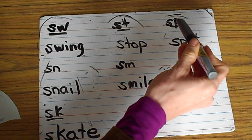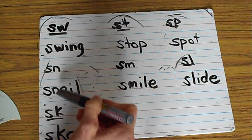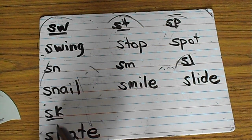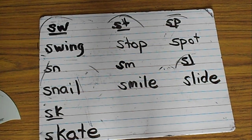Swuh, swing. Stuh, stop. Spuh, spot. Snuh, snail. Smuh, smile. Sluh, slide. Skuh, skate. That's it.